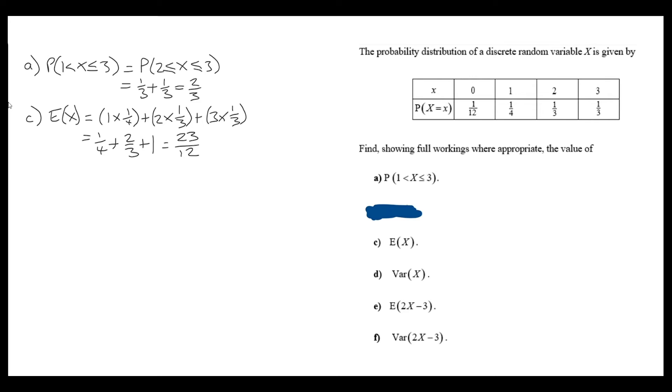Part D asks for the variance. We know that we always start the variance with the expectation of x squared. So, a very similar calculation, but I have 1 squared times a quarter, 2 squared times a third, and 3 squared times a third. Summing those together, we get 55 over 12.